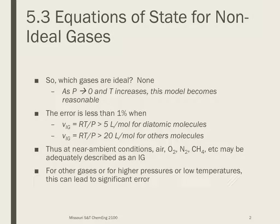How high, how low? The basic rule says that the error is going to be less than 1%, and usually I'm pretty good with less than 1% error. If I have a diatomic molecule and I calculate the ideal gas specific volume just using RT over P, and that value is larger than 5 liters per mole — and for other molecules I want a specific volume greater than 20 liters per mole — in those cases I can expect this to be within 1% of the answer.